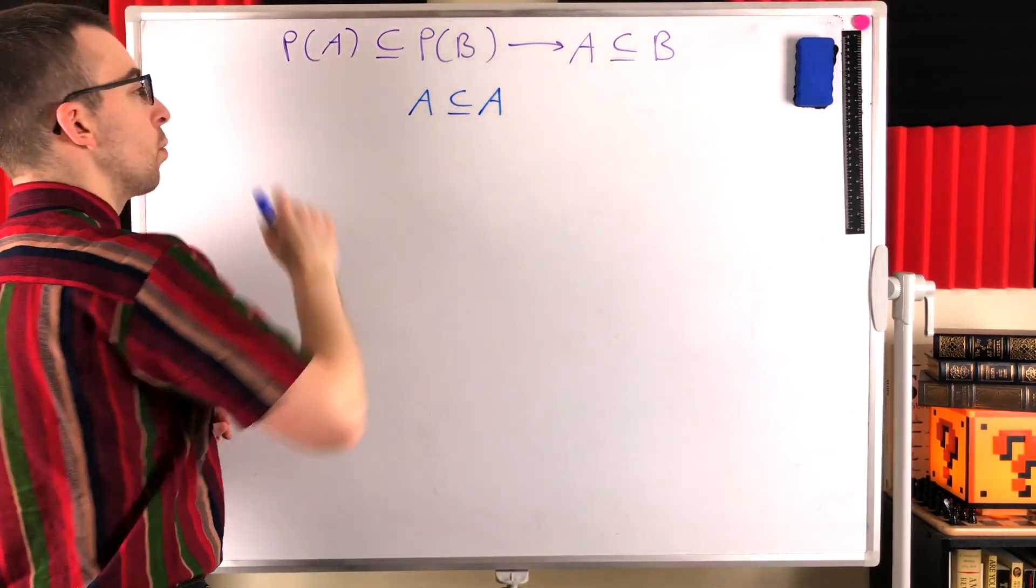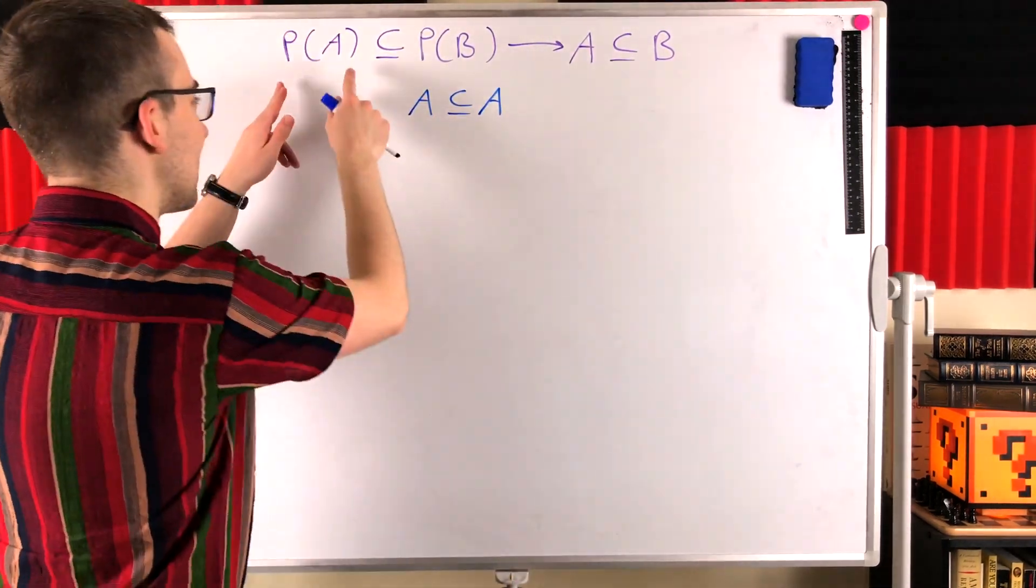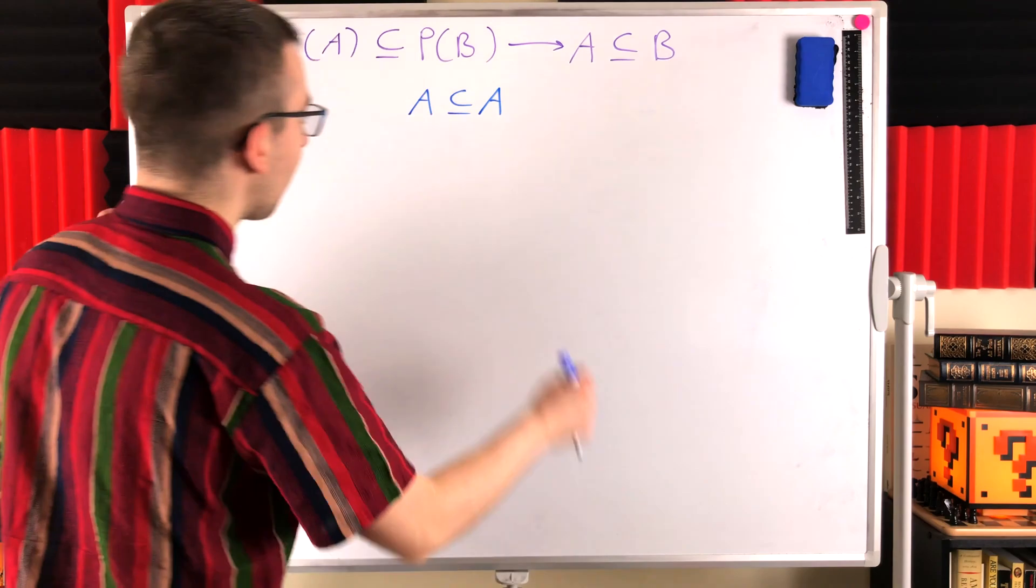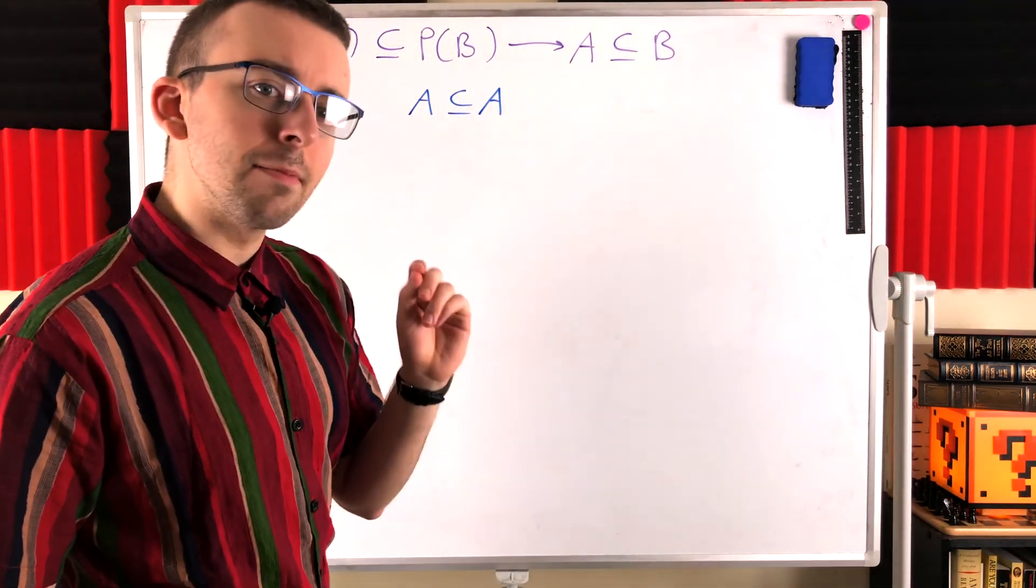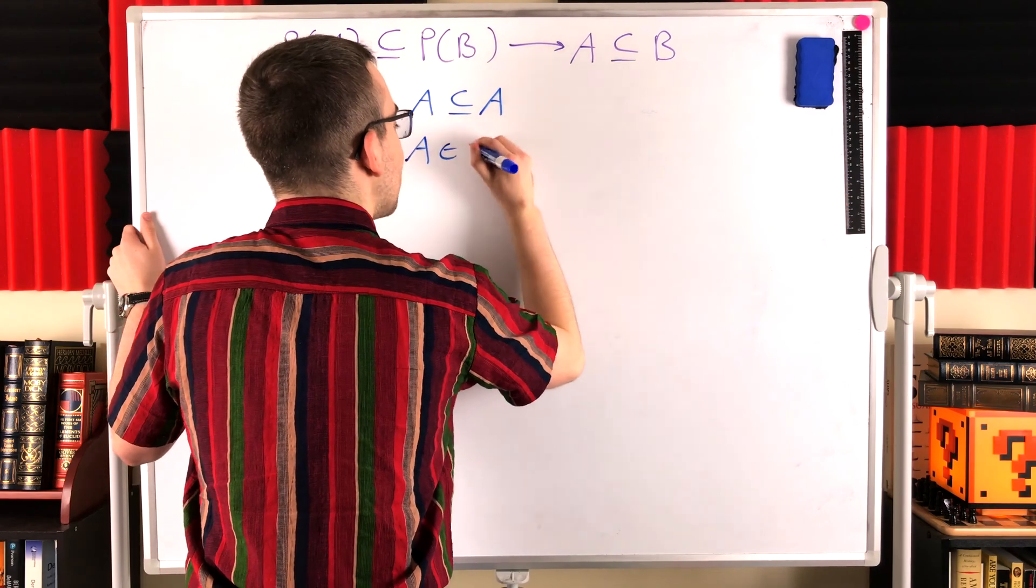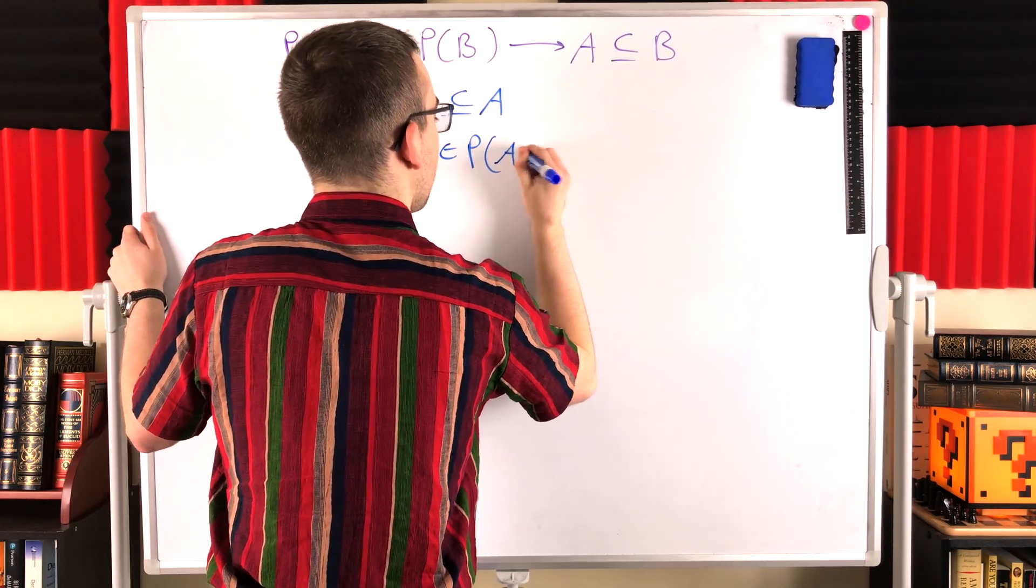What does that mean relative to our power set? Because we want to get into the power set because we know information about the power set. Well, if A is a subset of A, by definition of power set, that means that A is an element of the power set of A. Wonderful.